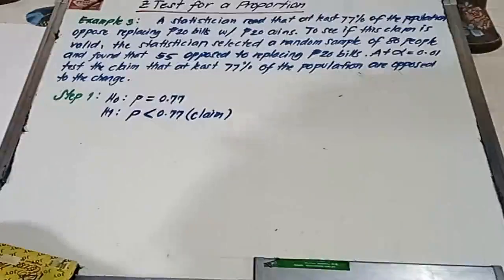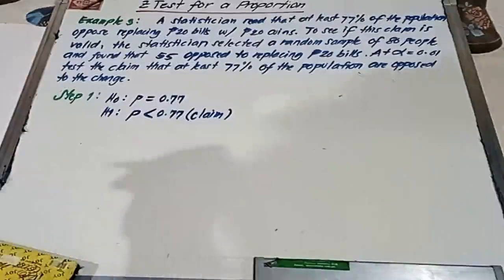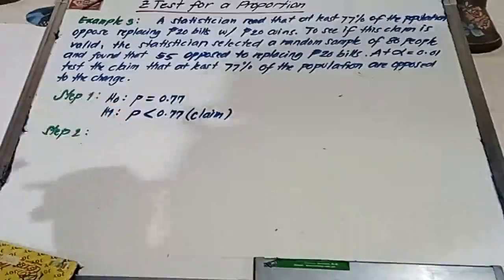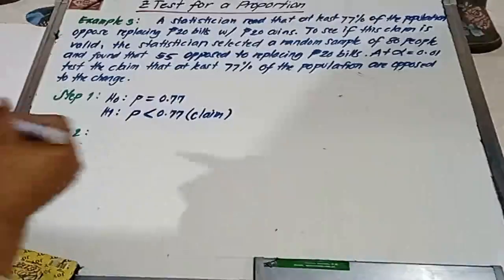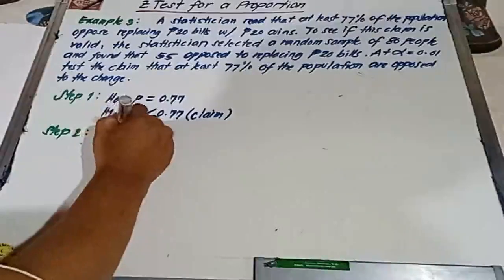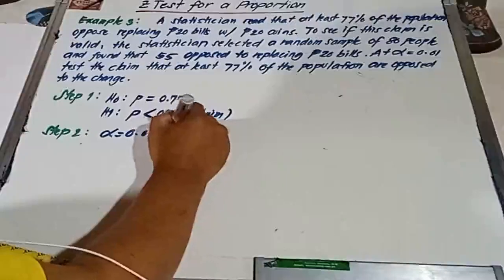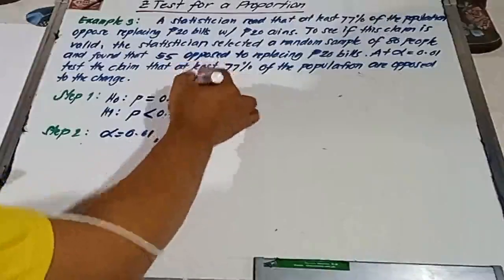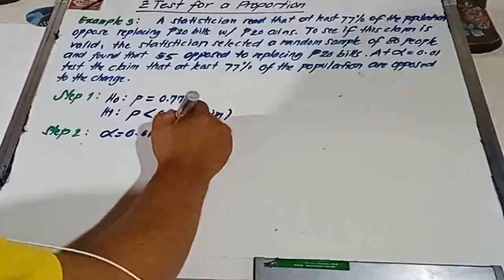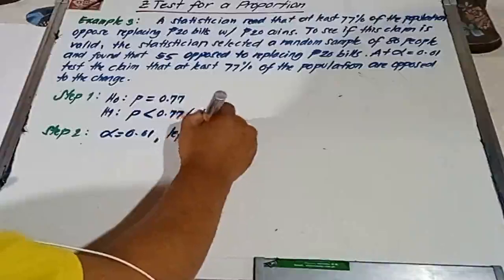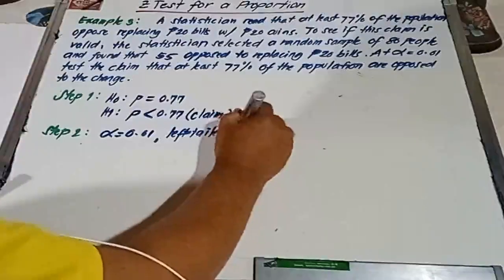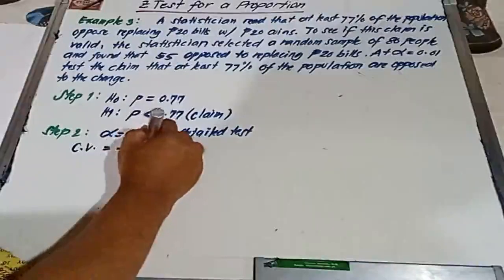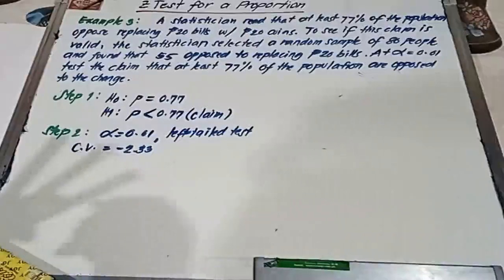And for our step number two, we're going to determine the critical value. This is one-tailed test, alpha equal to 0.01. This is left-tailed test because of the word least. Therefore, our critical value is equal to negative 2.33, same as in our example number two.